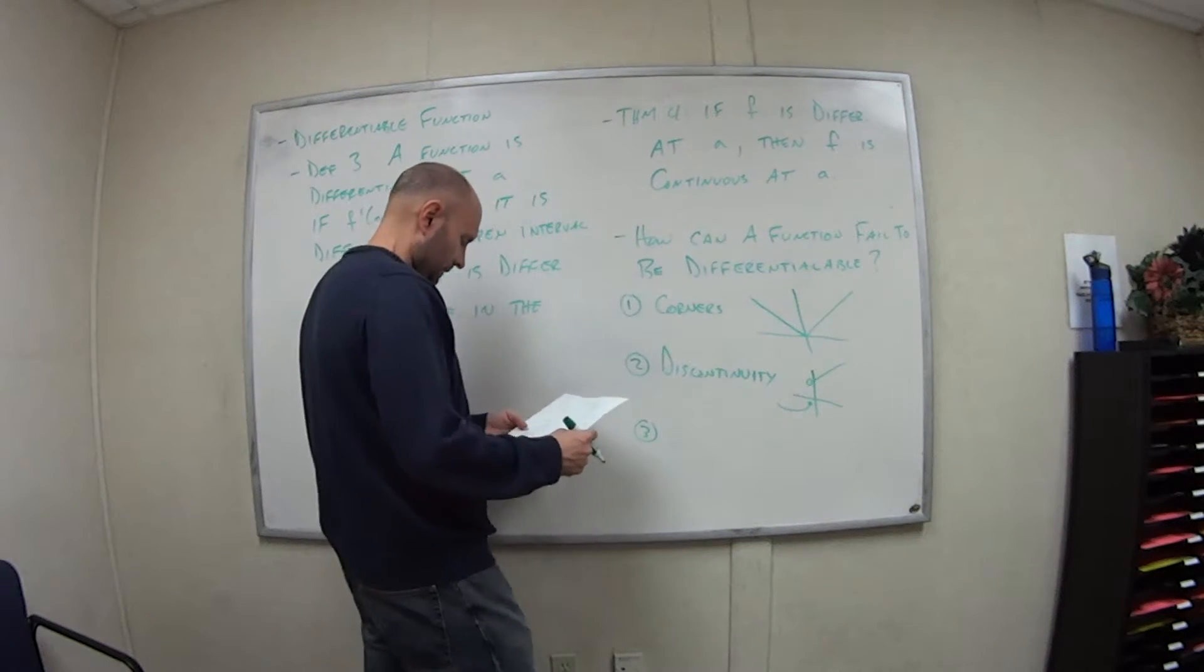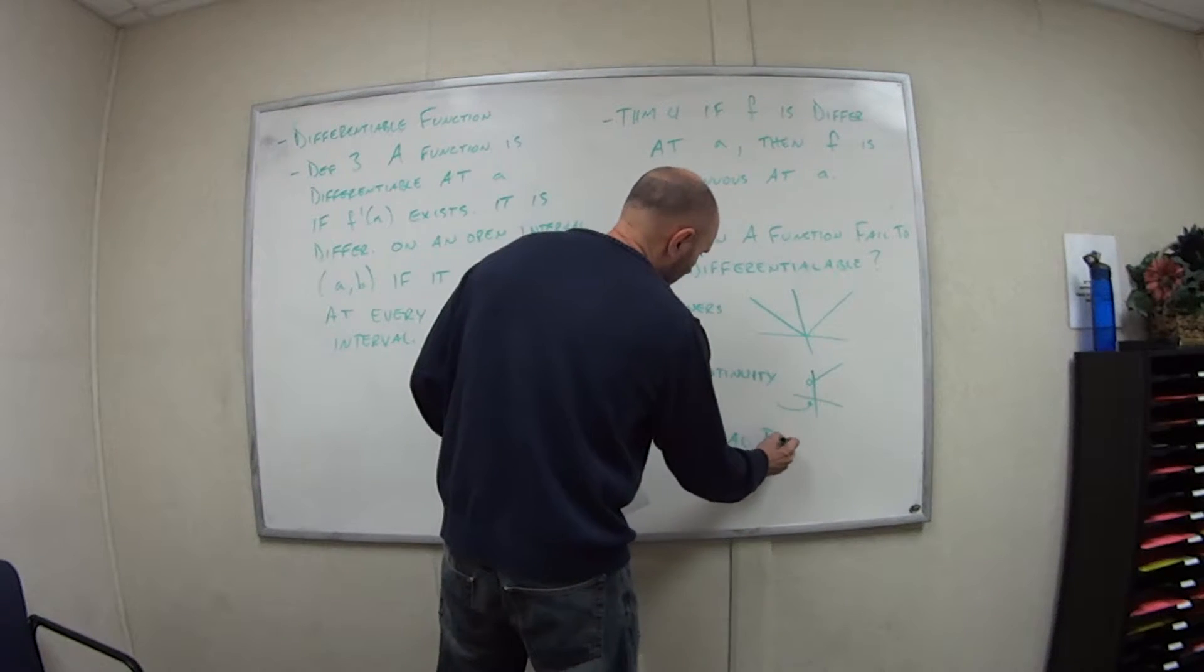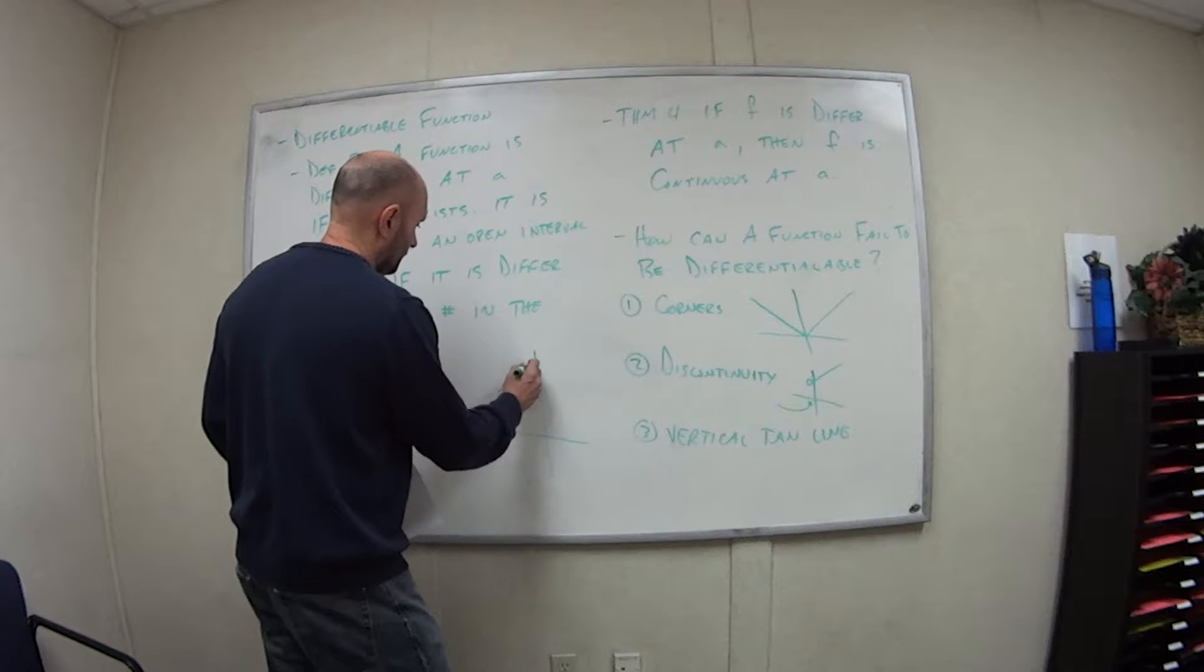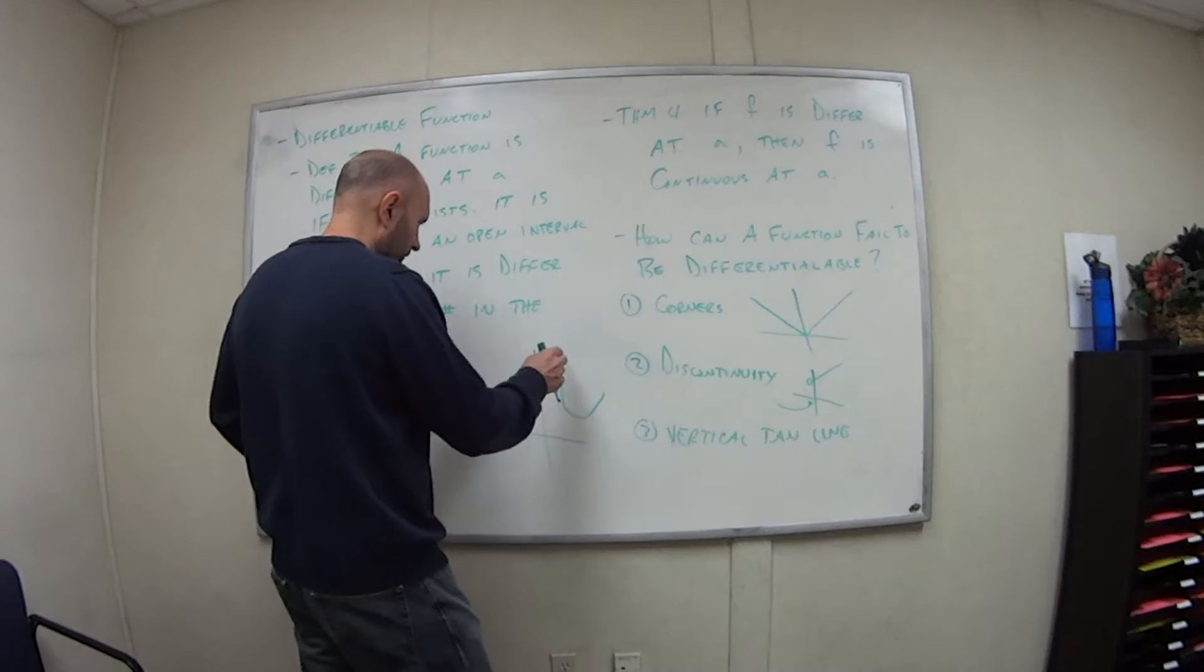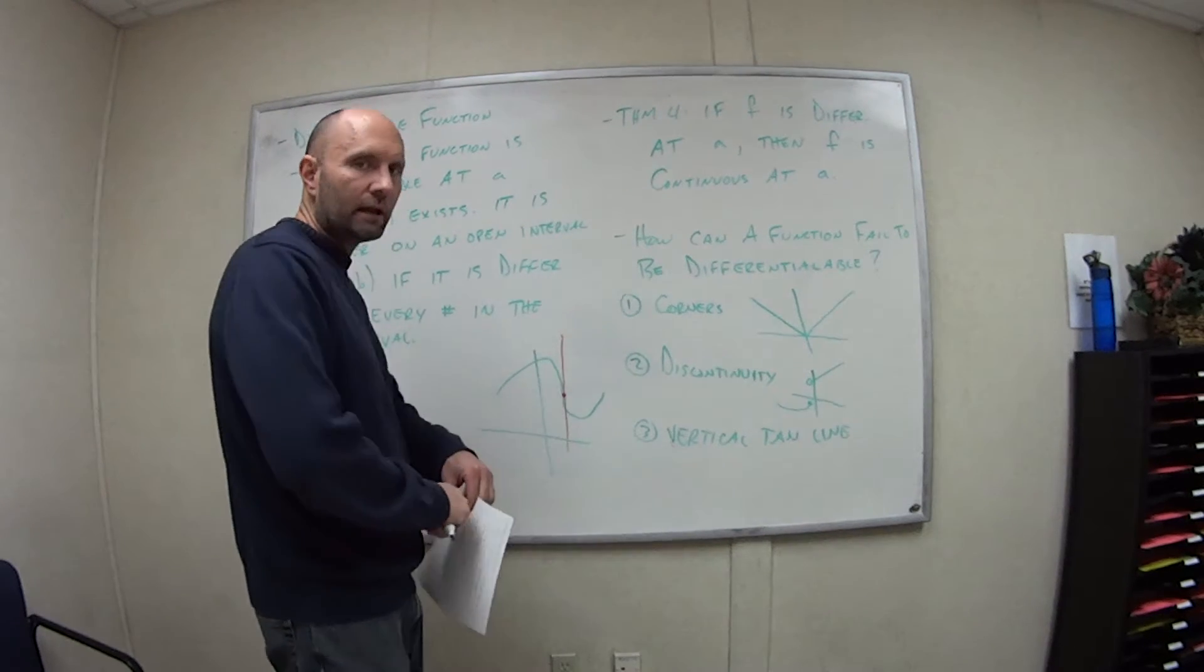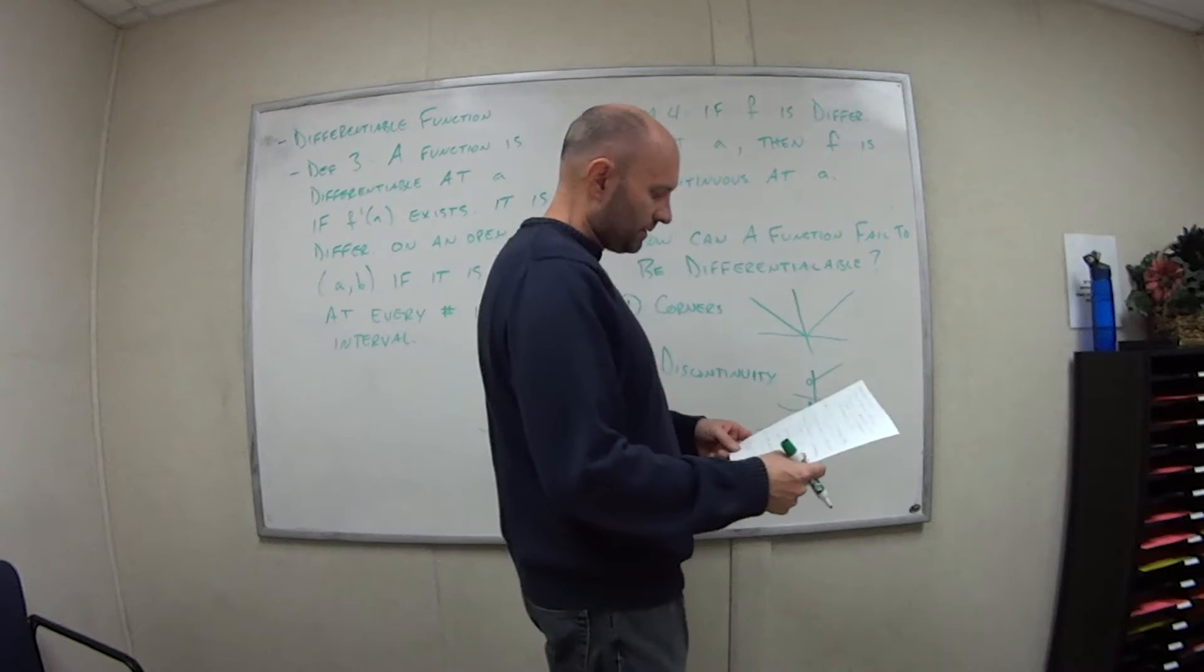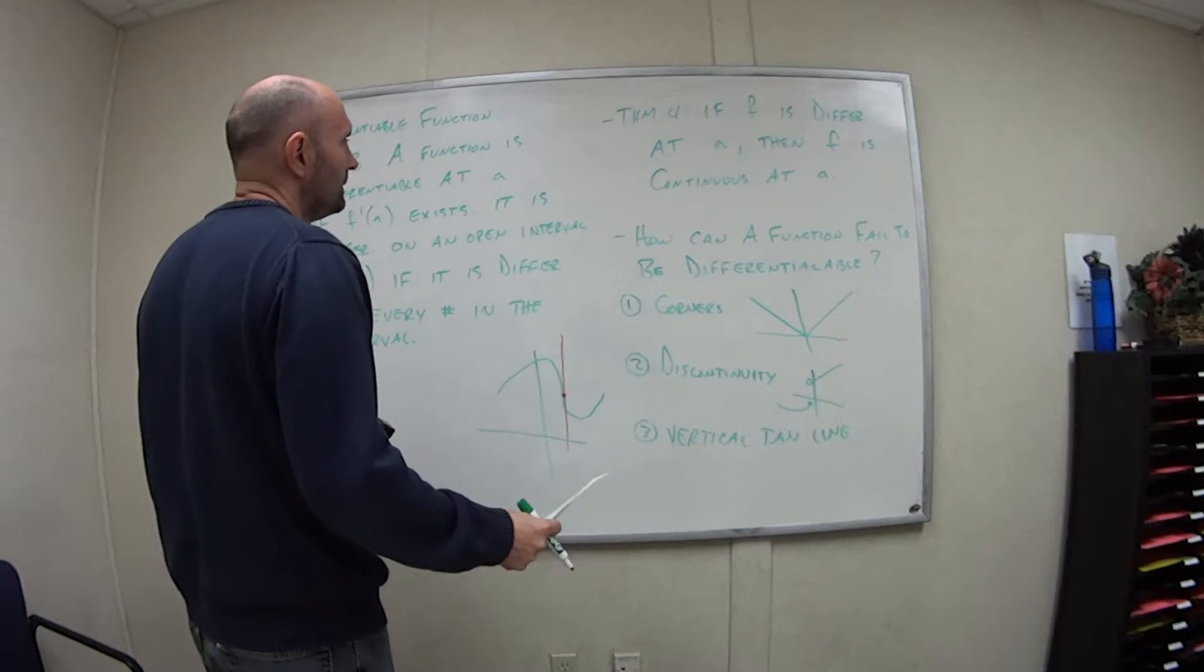And then lastly is a vertical tangent line. So if I come up over here, let's say I have some curve it looks like that. Well, at some point here if my tangent line is a vertical line, what's the slope of a vertical line? It's undefined, right? So in that situation I wouldn't be able to differentiate it. So those are the three situations where a function can fail to be differentiable.